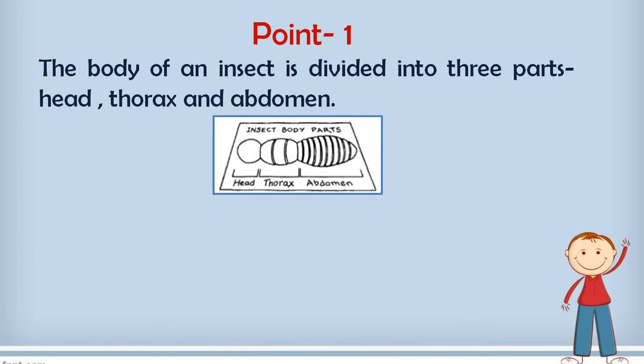Point number 1 is telling that the body of an insect is divided into three parts: head, thorax and abdomen. It means all the insects have three parts in their body. So children, remember that from today if anybody will ask you that insects have how many body parts, then you will tell that these are three.